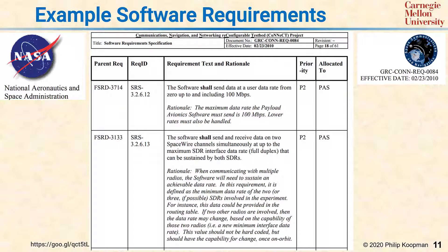The column after that is priority — some requirements will have higher priorities than others. And the last column is allocation: which subsystem or functional block this requirement is allocated to, meaning that subsystem is entirely responsible for the ability of the overall system to meet this requirement.